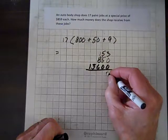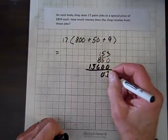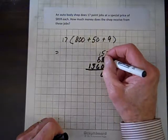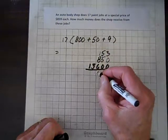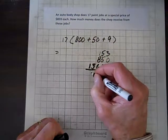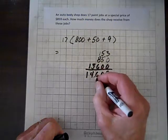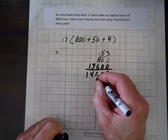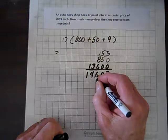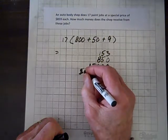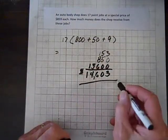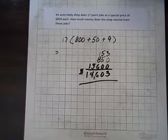Let's add these. I get 3. 5 and 5 is 10. 1 and 1 is 2. And 8 is 10, 16. 3 and 1 is 4. And so, I get... How much money does he make? Well, he takes in... That's the amount right there. $14,603.